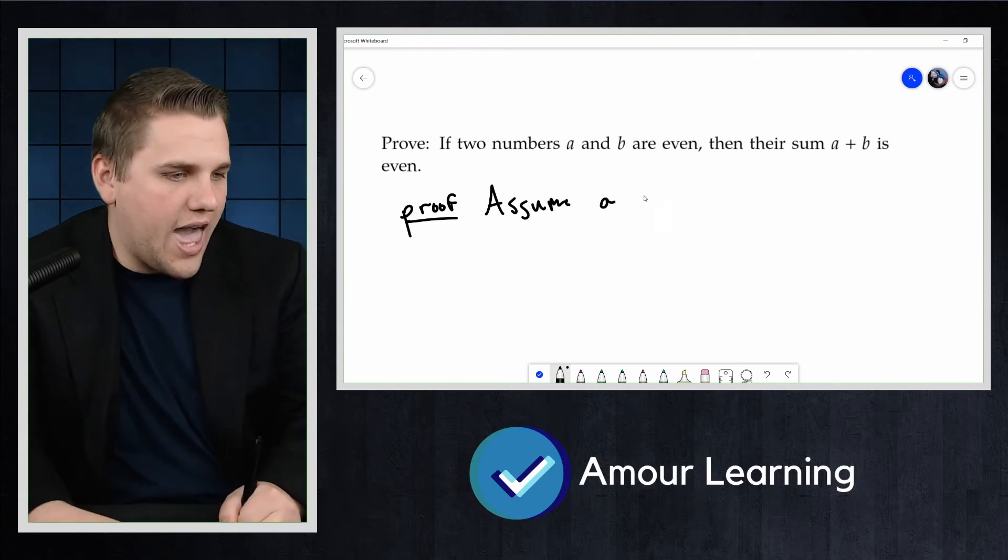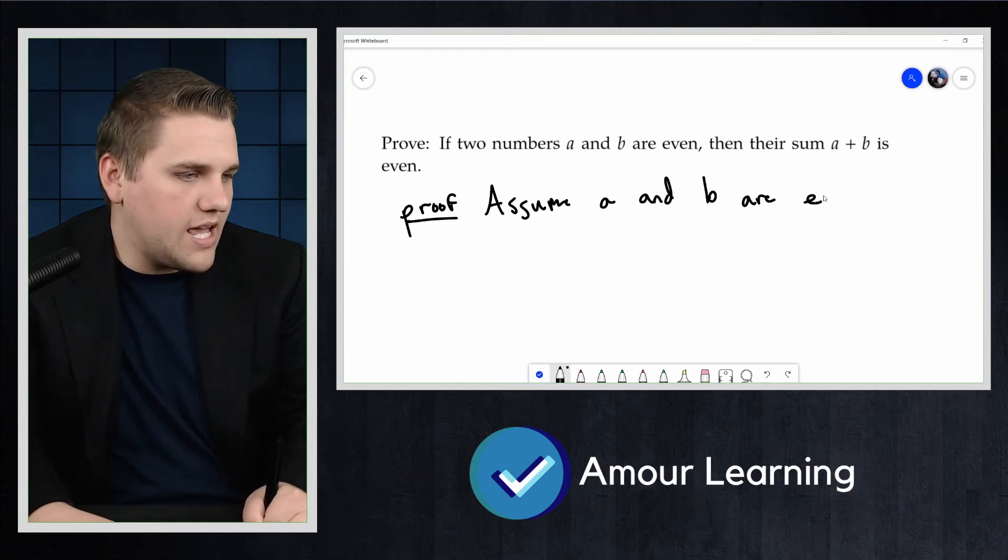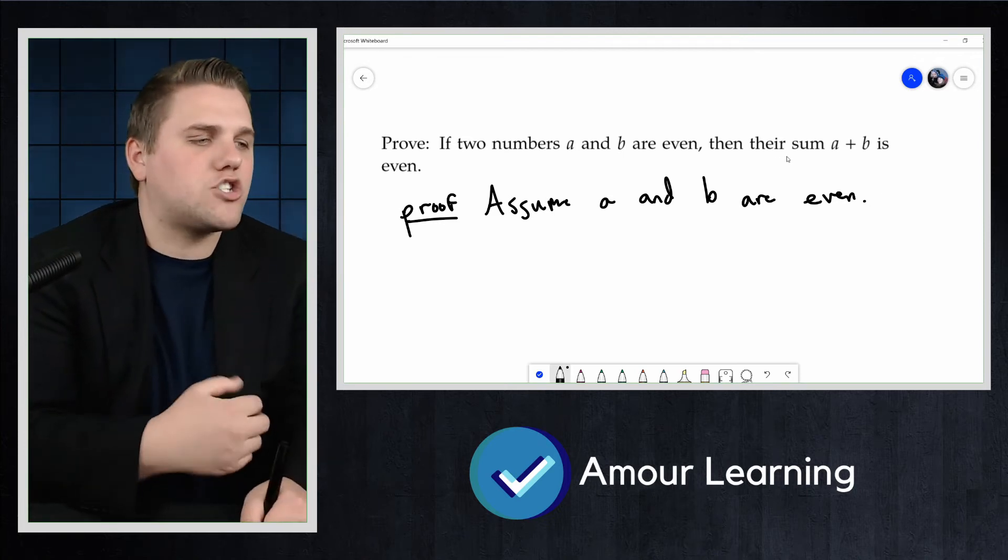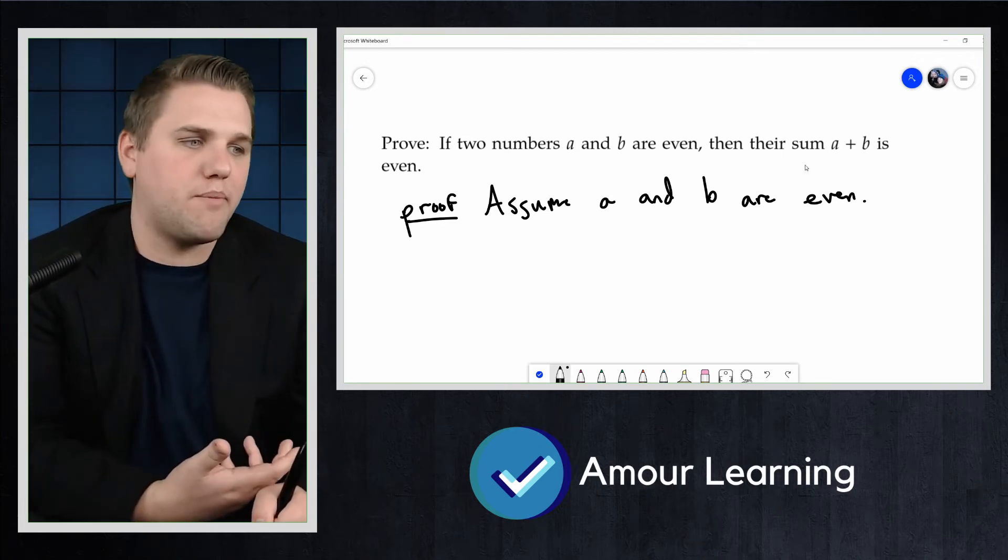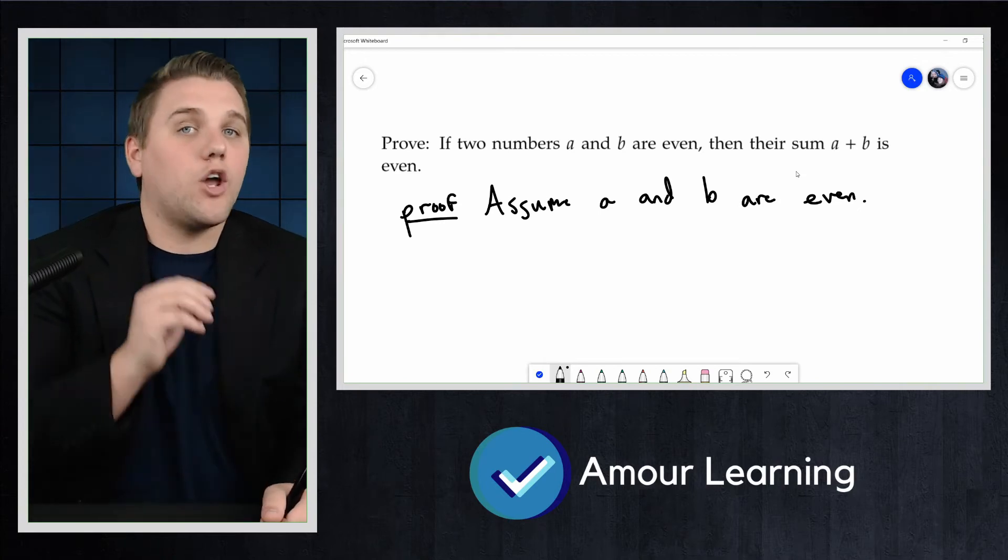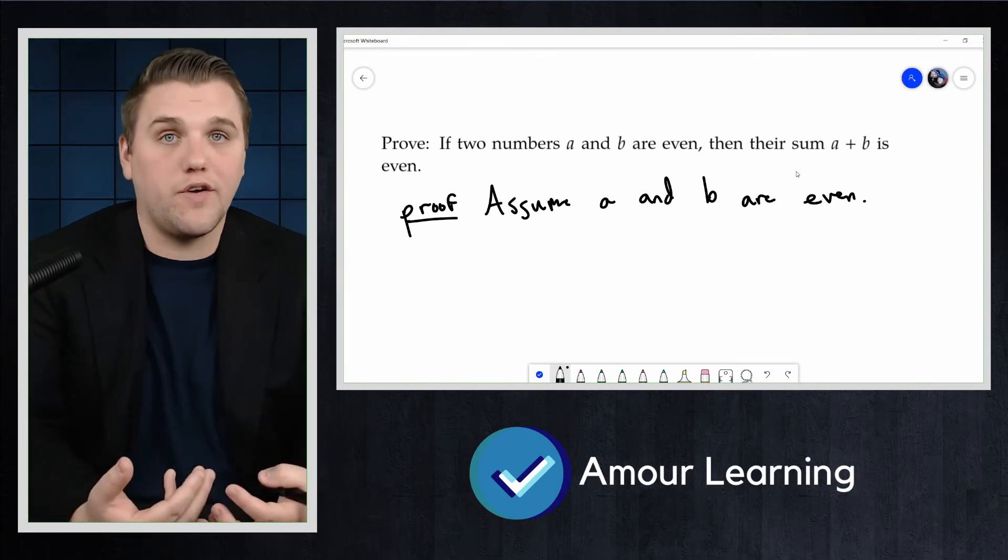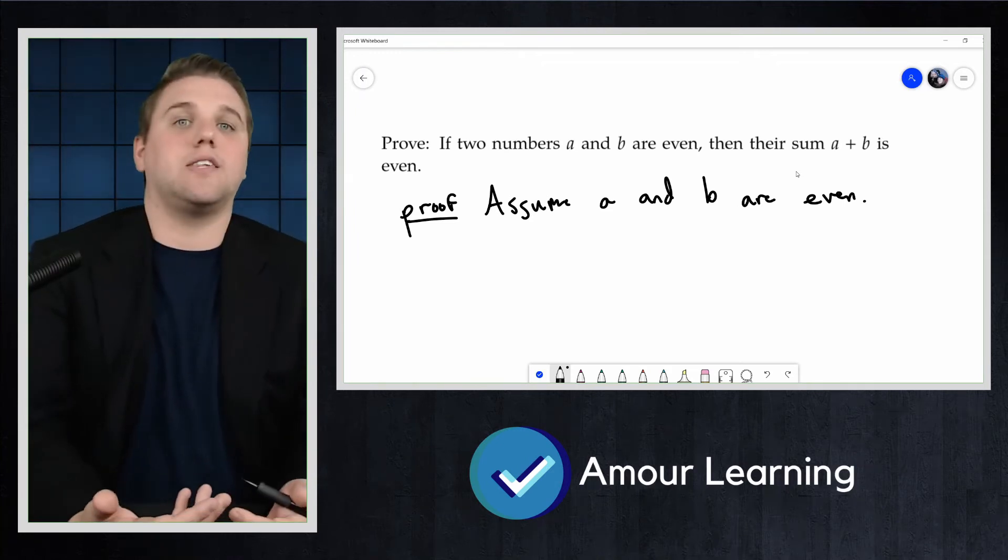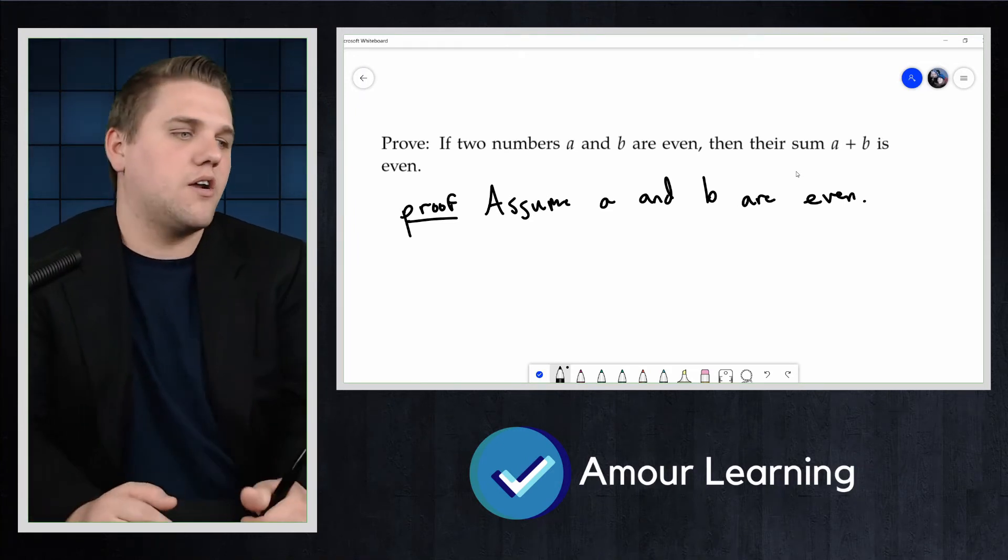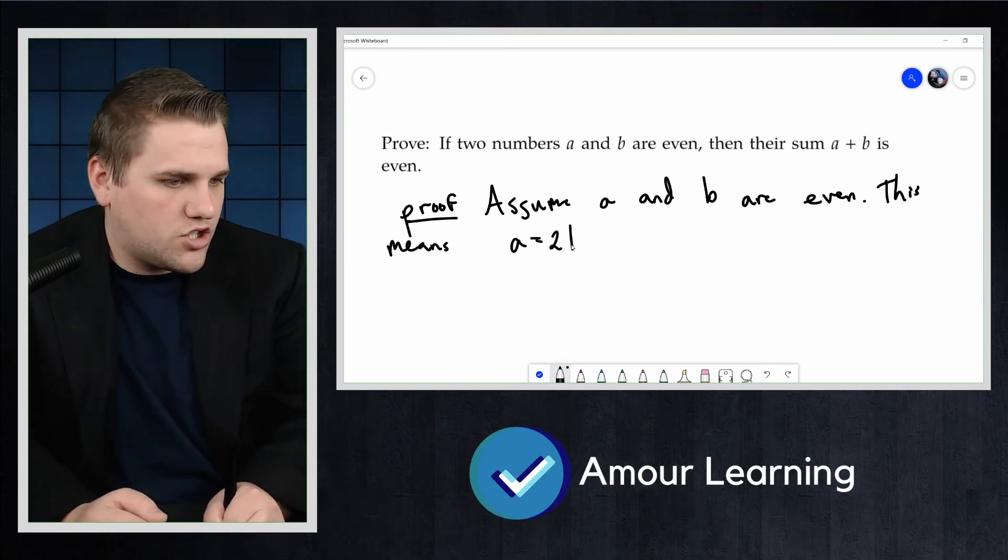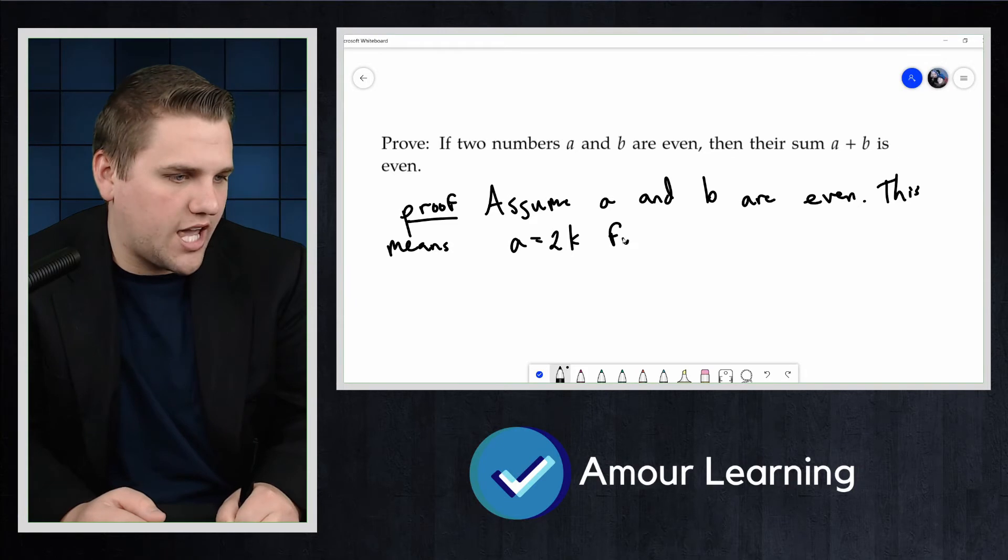So let's assume A and B are even. We get this for free. We get to assume this. And now let's try to show that the sum of these two numbers is even. A great way to run a direct proof is to explain what this hypothesis means. Let's unravel some definitions here.